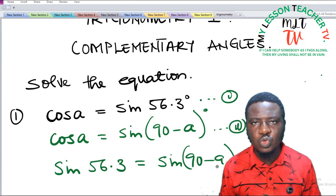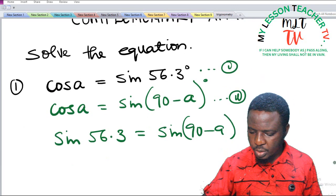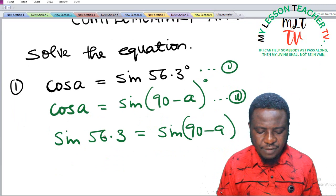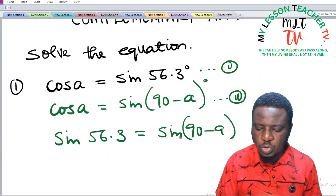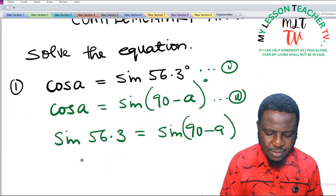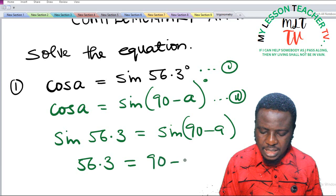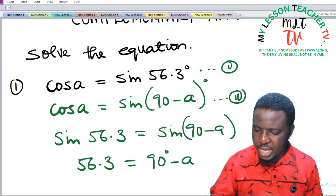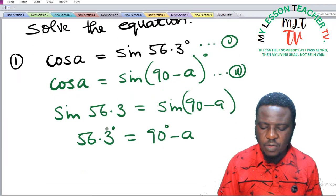Since both are said to be equal to cos A, when you simplify, if sine 56.3 is equal to sine of 90 minus A, that definitely means that 56.3 is equal to 90 degrees minus A.